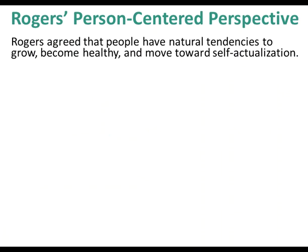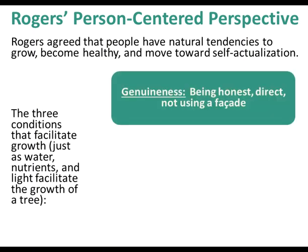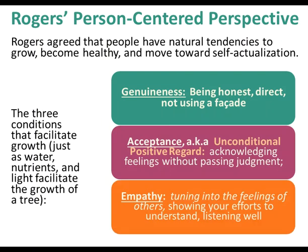Rogers' person-centered perspective agreed that people have natural tendencies to grow, become healthy, and move toward self-actualization. The three conditions that facilitate growth — like water, nutrients, and light for a tree — are: genuineness (being honest and direct, not using a facade), acceptance or unconditional positive regard (acknowledging feelings without passing judgment), and empathy (tuning into the feelings of others, showing effort to understand and listening well).